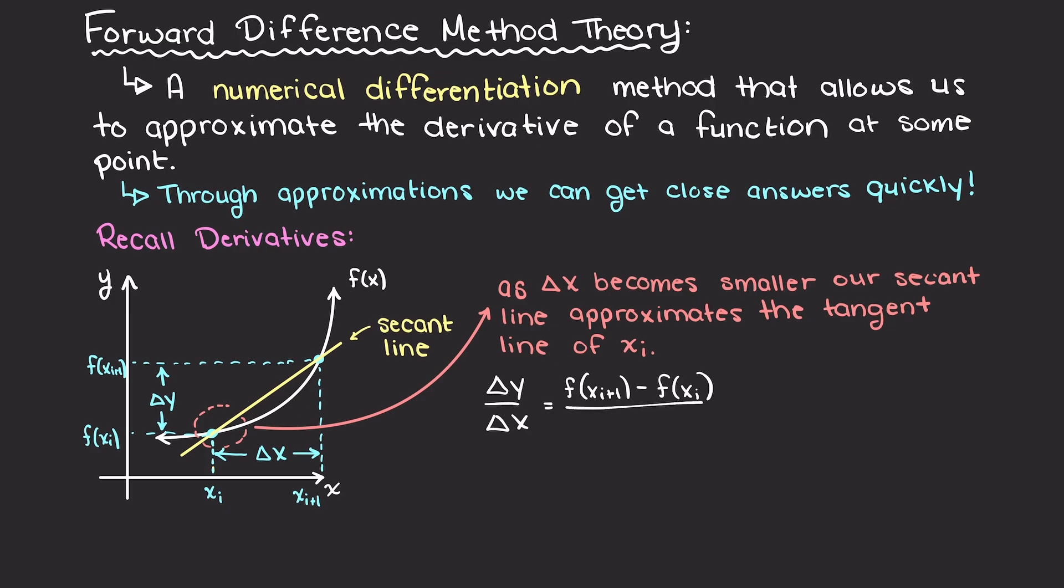As we learned in calculus, as our delta x term gets smaller and smaller, our secant line begins to approximate the tangent line at the input of xi, which is the derivative as the limit goes to zero. This line then becomes the instantaneous rate of change at point x, which is our derivative.